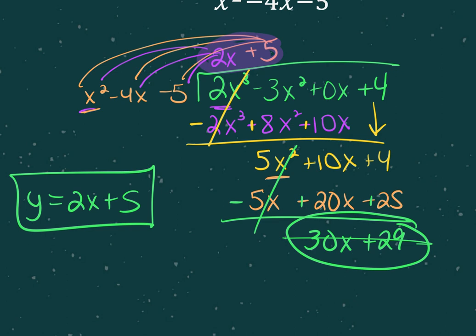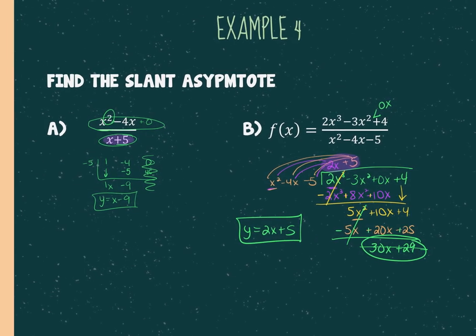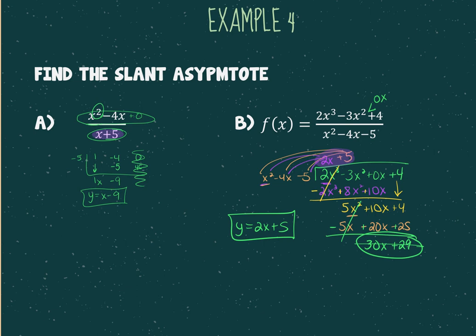If you know you need to review synthetic and long division, I'll put a prereq page with links at the top of the module. That's an Algebra 2 skill they assume you already have. The slant asymptote will always be linear — coefficient times x plus a constant — and the constant might be zero.